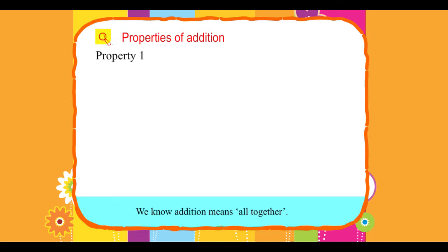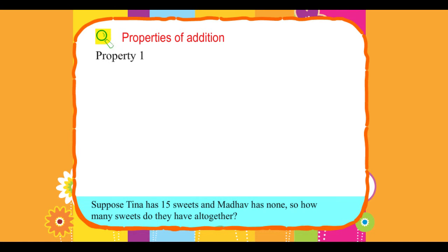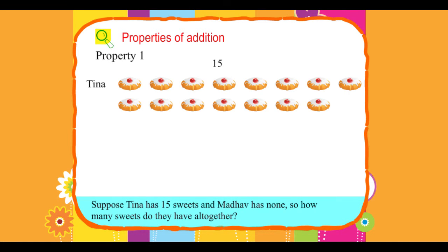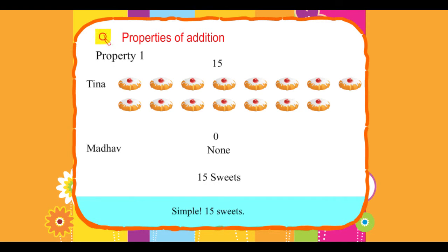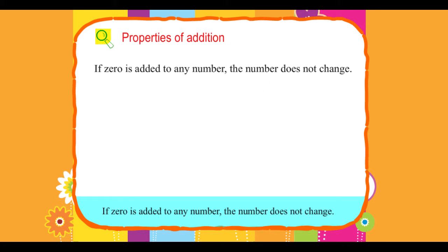Property 1: Suppose Tina has 15 sweets and Madhav has none. How many sweets do they have all together? 15 sweets. If 0 is added to any number, the number does not change. For example, 216 plus 0 equals 216.